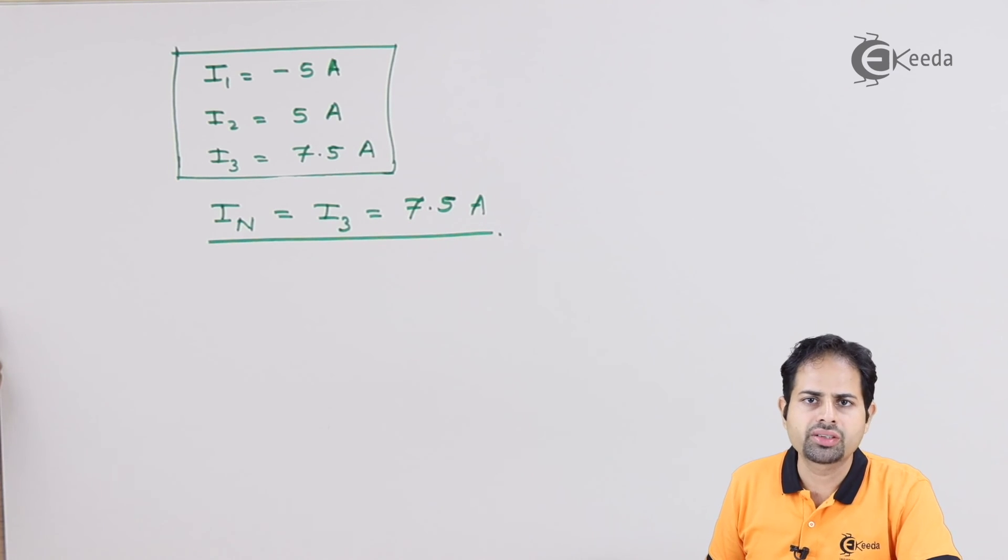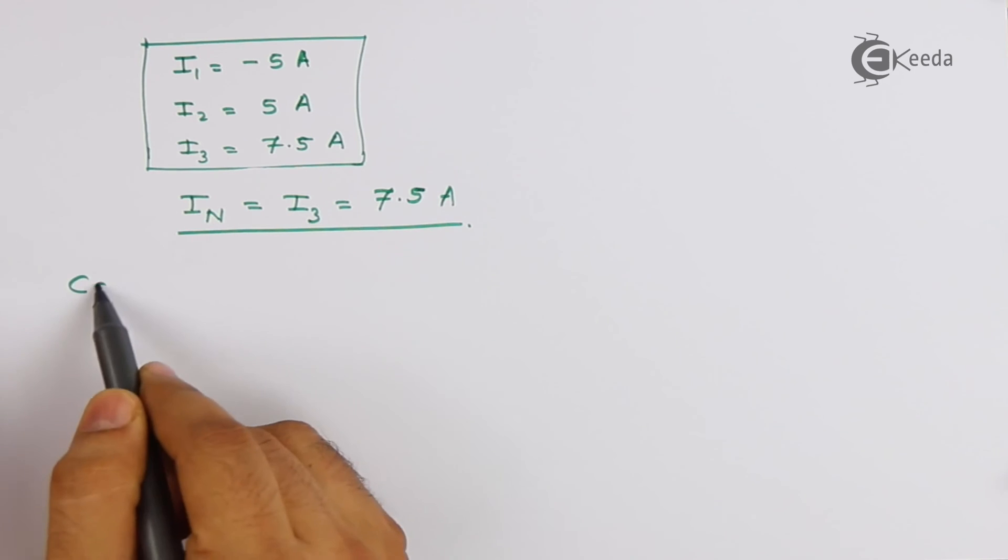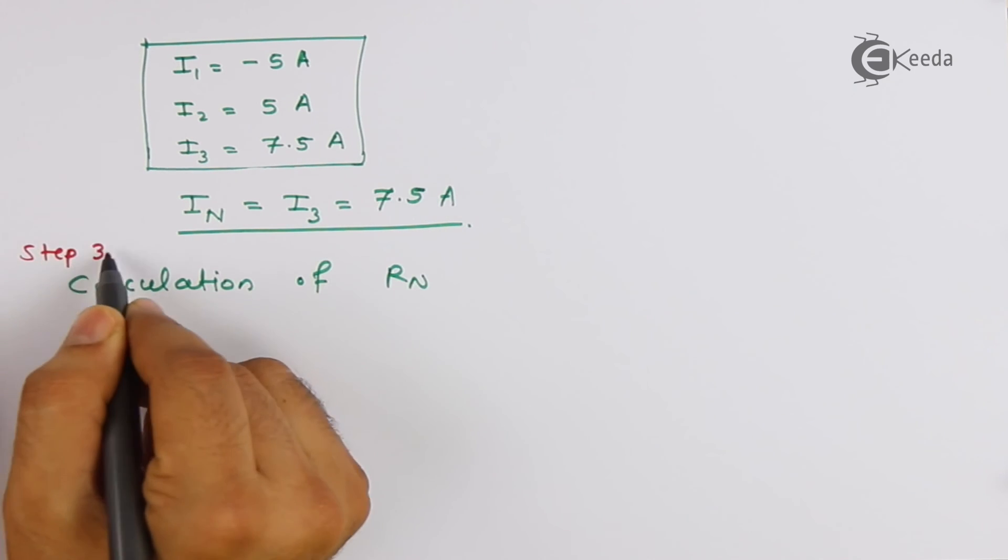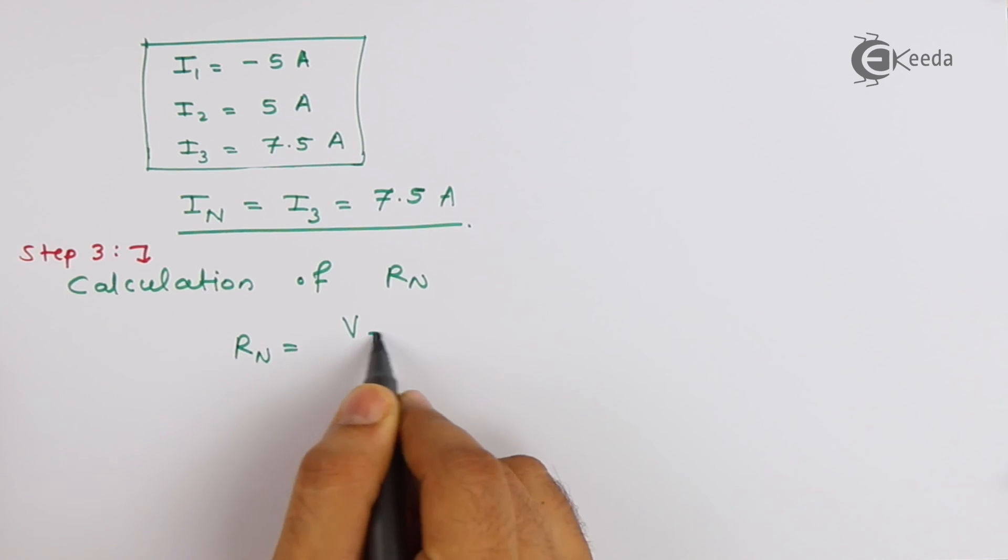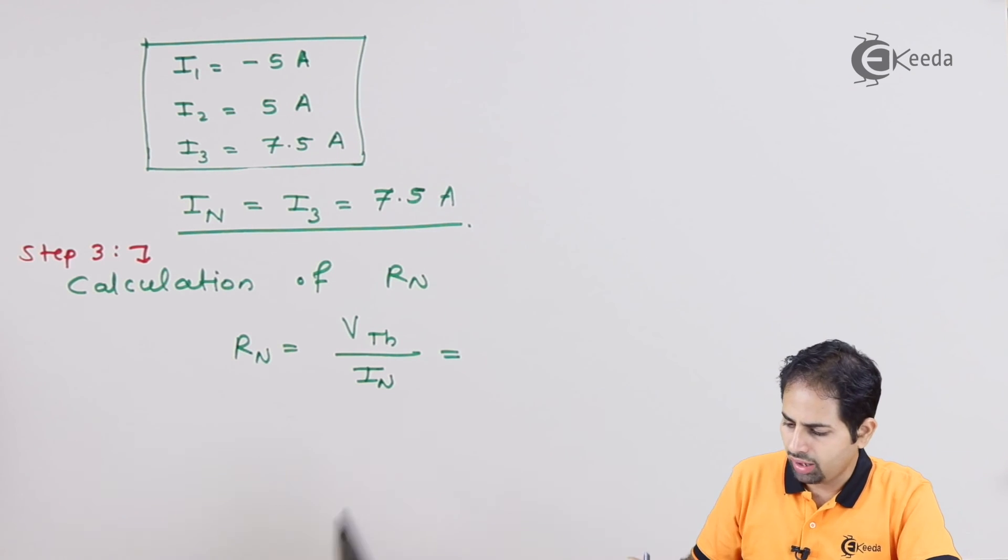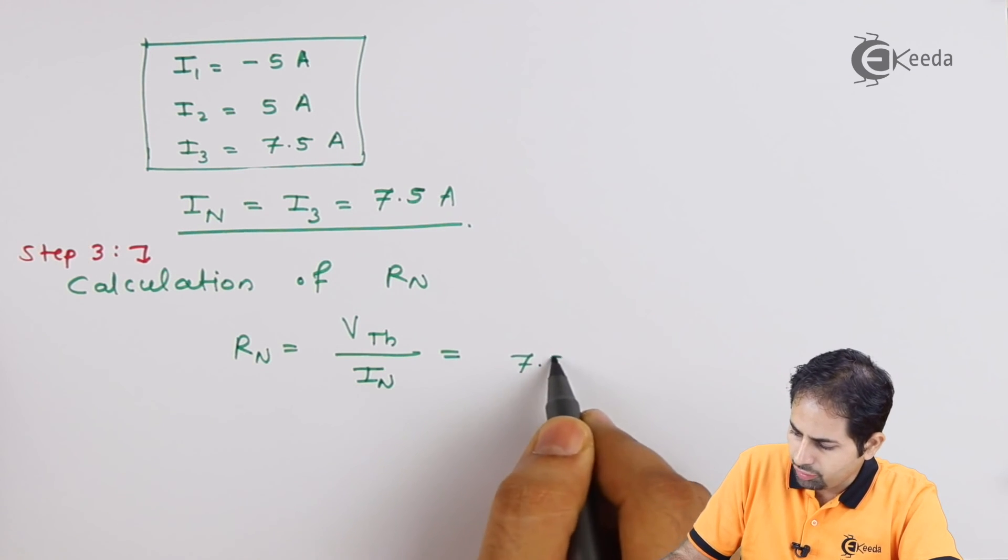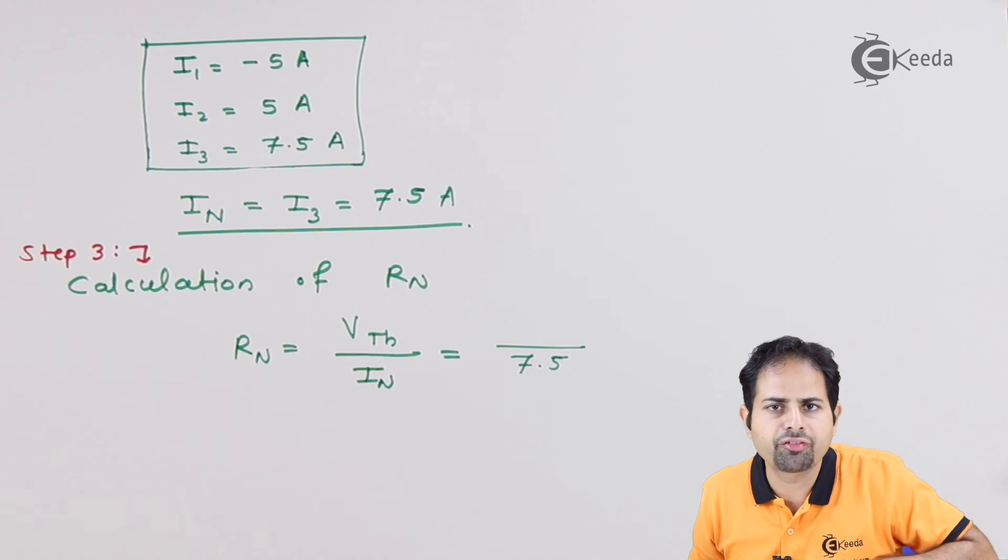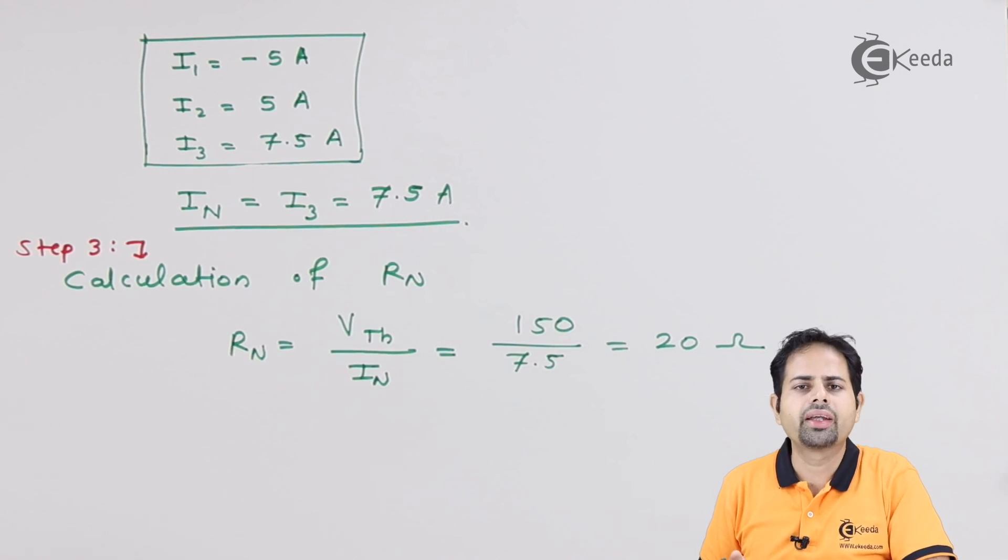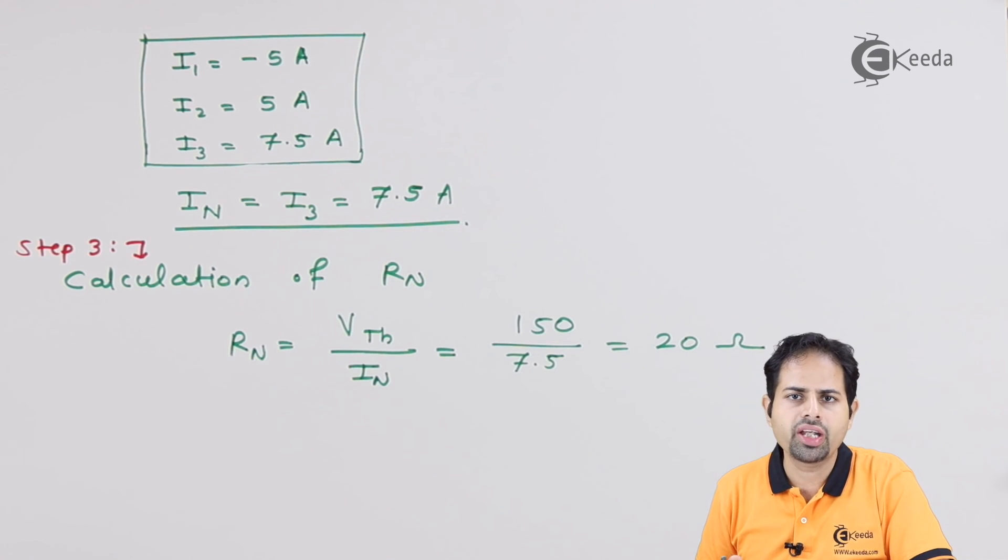Let us now go for step number three, calculation of Rn. Substitute the value of Vth as well as In. In is 7.5, and Vth will refer, Vth is 150 volts. And that gives us 20 ohms. So you got the Rn value, that is Norton's equivalent resistance as 20 ohms.